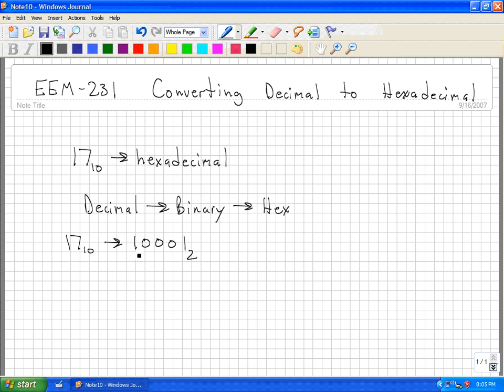So 17 decimal converted to binary is 1, 0, 0, 0, 1. Now to convert to hex,